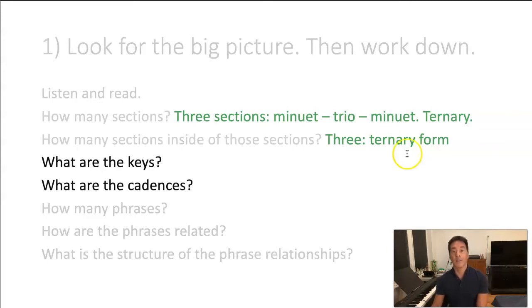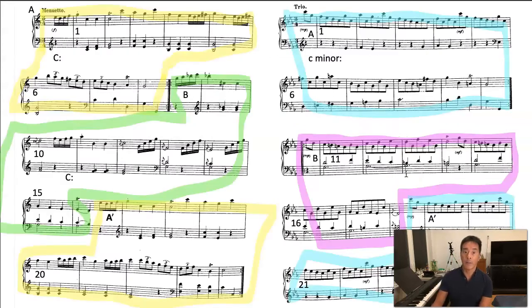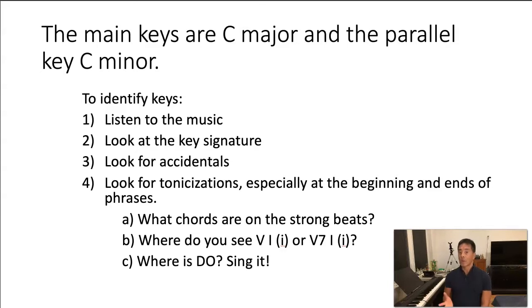Now we're going to look at the keys and the cadences. This is maybe where it starts getting a little bit trickier. So starting with the key, the first thing you should look at, of course, are the key signatures and possibly the cadences. Try to get the overall big picture of the keys. So here are some hints for finding the keys. Of course, you want to listen to it. And then I mentioned, look at the key signatures. Look for accidentals. If there are no accidentals, you're pretty sure that you're in major. It should be obvious. The key should be obvious. Look for tonicizations. If you start seeing a bunch of accidentals, then look for five ones at the ends of phrases. Always look at the beginnings and the ends of the phrases. What are the chords on the main beats? Because, again, they're probably going to be one or maybe five.